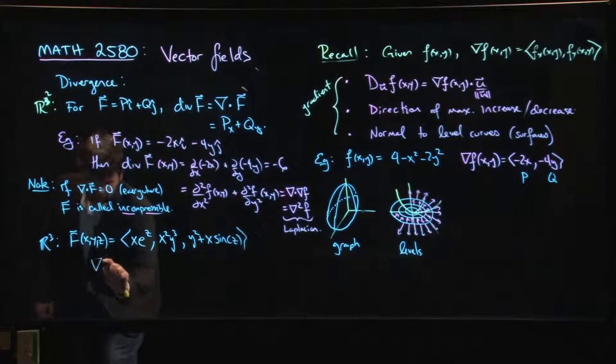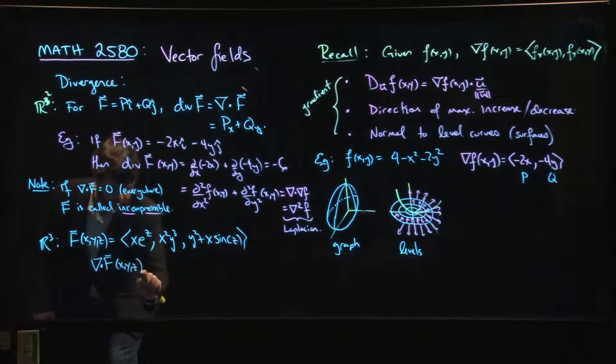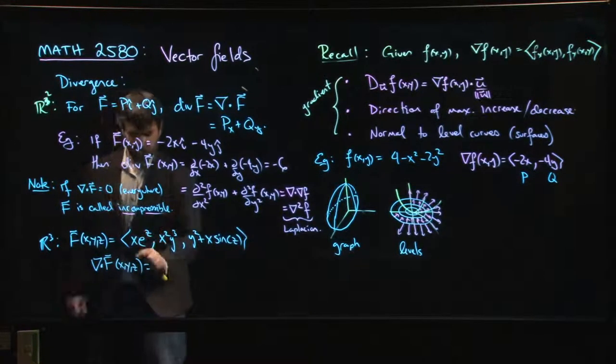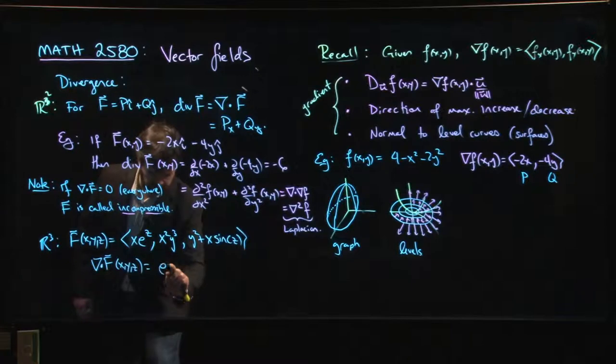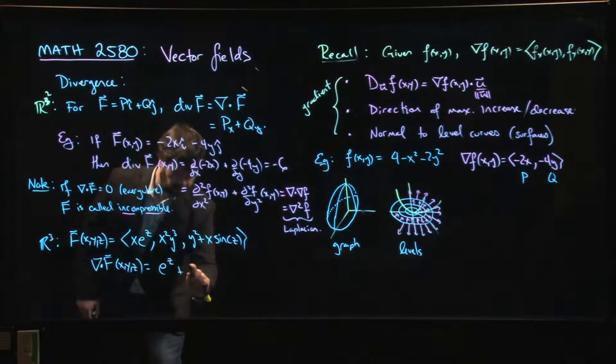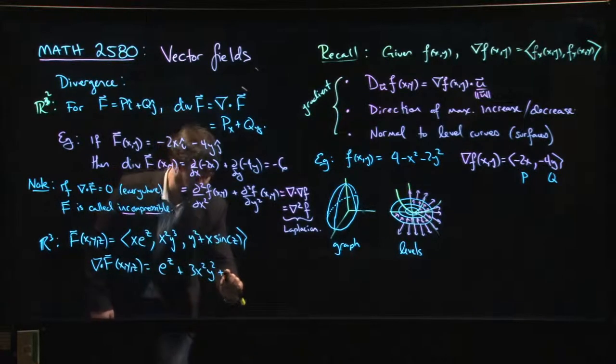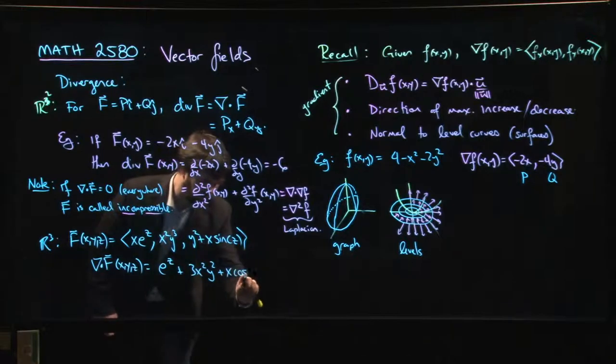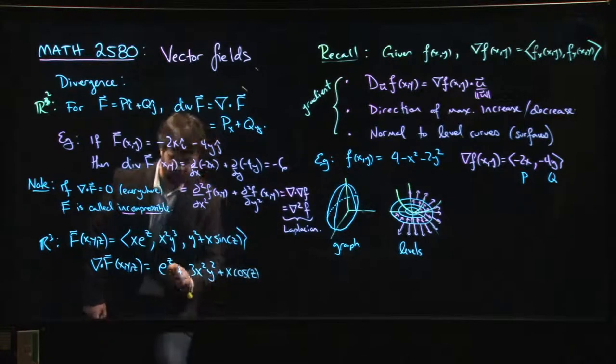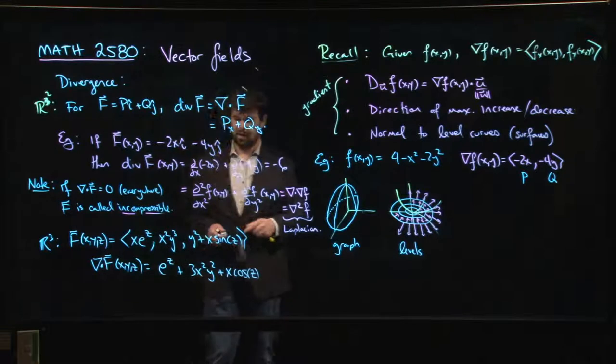If I want to compute the divergence, that's going to give me a function. And what is that function? Well, I take the x derivative of the x component, so I get e to the z. I take the y derivative of the y component, so I get 3x squared y squared. And I take the z derivative of the z component, I get x cos z, and I add them up. And I've computed my divergence.